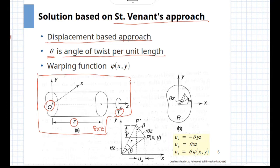As we have seen in the previous slide, each of the cross-sections gets warped under the action of the torque and this warping is defined by warping function psi, which is depending only on x and y coordinates and not on z. At any value of z, the warped surface is going to remain the same and there will not be any change in this particular function.